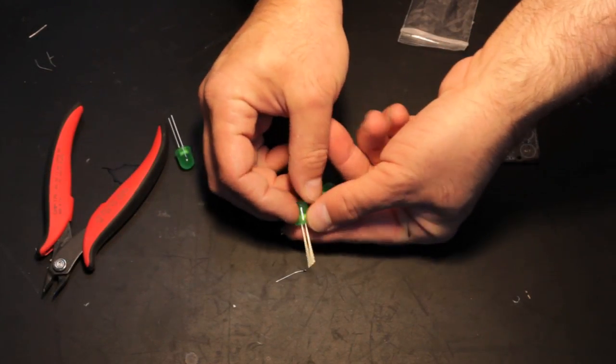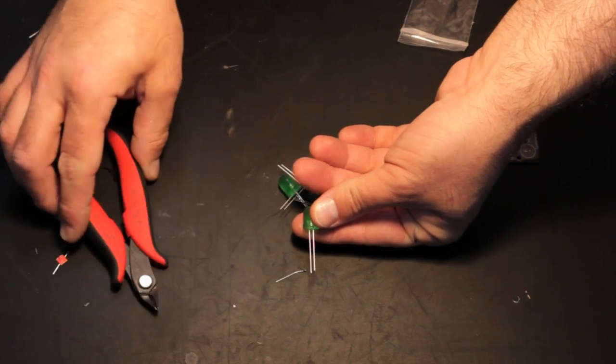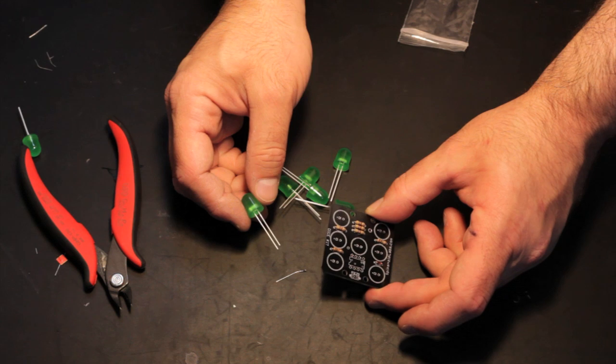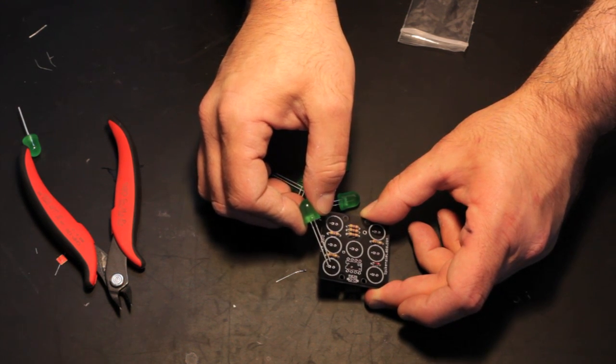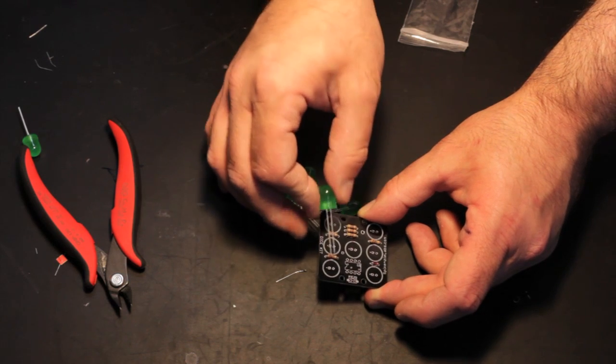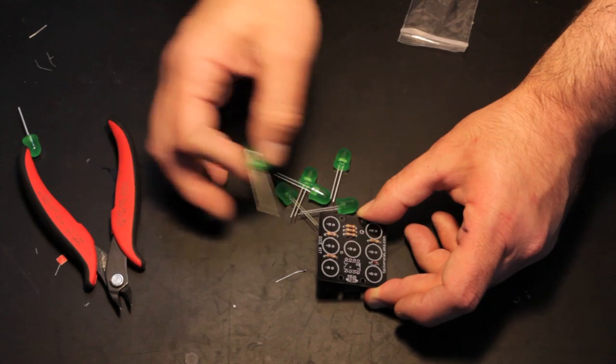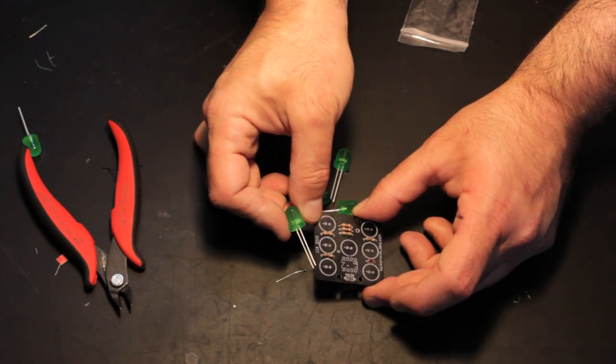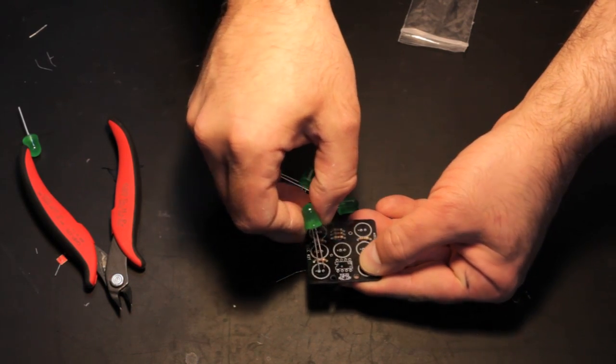You'll notice that on the LEDs, one leg is longer than the other leg. The longer leg is positive. And if you look on the PCB, you will see that there's a little positive sign right over here. And so the longer leg goes through the hole marked positive. Very simple. If you put them in the wrong way, they won't work. We're going to start by putting this LED in.